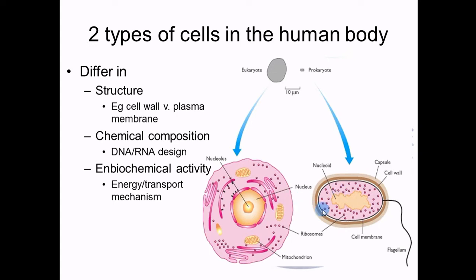We'll talk about that when we cover microbiology. The last difference is biochemical activity. The way the eukaryotic cell makes energy is through two processes, and you know the major organelle is mitochondria. Evolutionarily, they believe mitochondria were once bacteria that were very good at making energy, so we pulled them into our cells — we essentially domesticated them. The way bacteria make energy is different, so we can target those differences when we try to kill, control, or regulate bacteria.